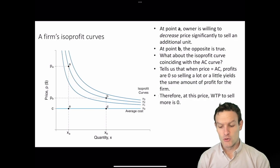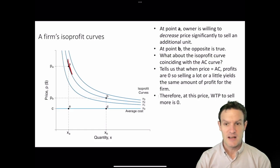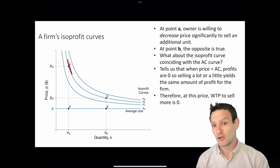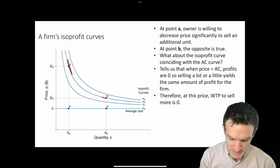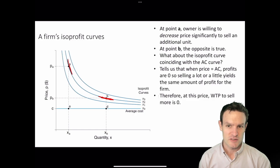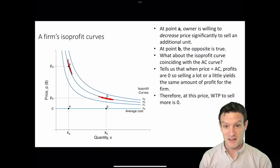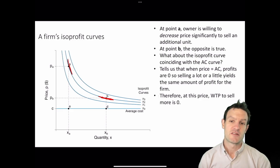At point A, the owner is willing to decrease the price significantly to sell an additional unit. The marginal rate of substitution, defined as the negative of the slope, is large — they're willing to pay a significant price reduction to sell more units while keeping profit constant. At point B, the opposite is true: they will only decrease the price by a little bit to sell more output, because the slope is flat at point B, so the marginal rate of substitution is low.